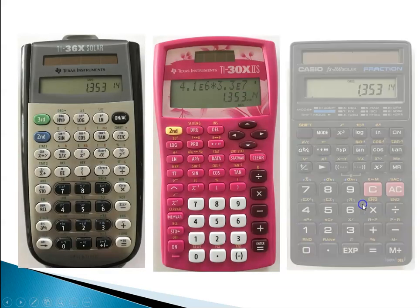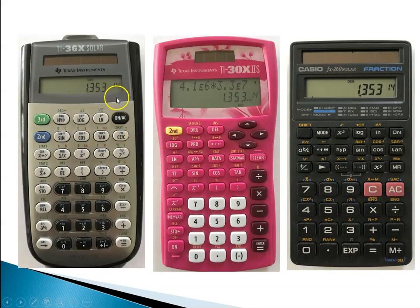So on the three calculators, what would it look like? So on the first TI, where we use the EE button, it will look like this with this little offset. On the pink calculator, the TI-30X2S, you'll see my final display is going to look like this. And it's kind of tiny, but this actually says 1.353 times 10 to the 14th. And then on the Casio calculator, again, it shows it with an offset for the exponential.